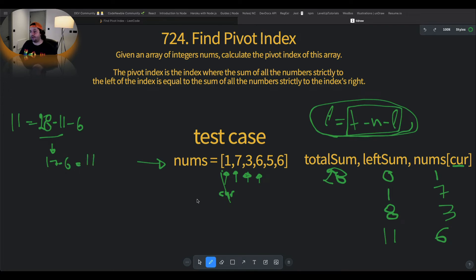We have found our pivot index. And this is going to be the pointer current. And the pointer current has the value 3. And we return 3.